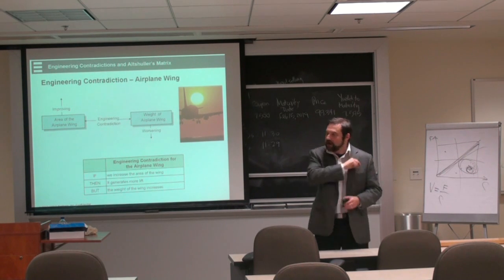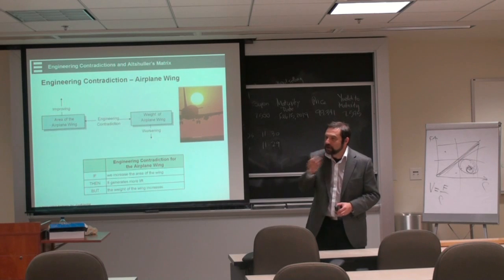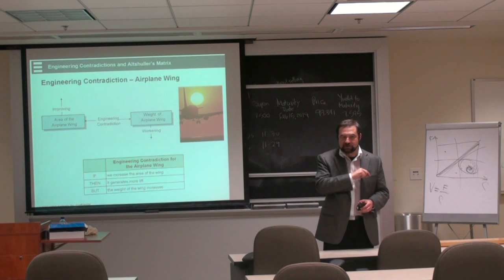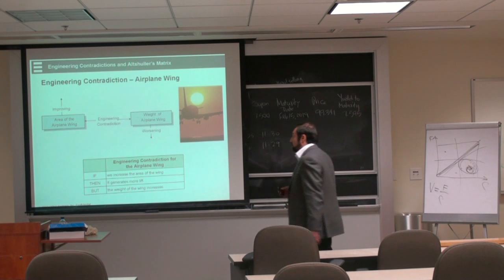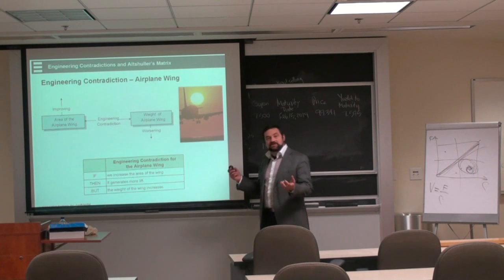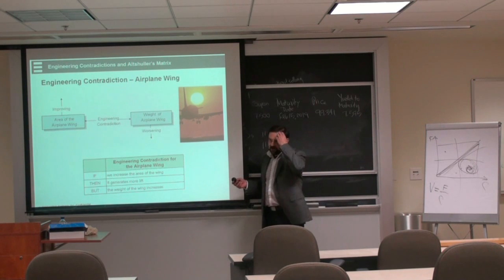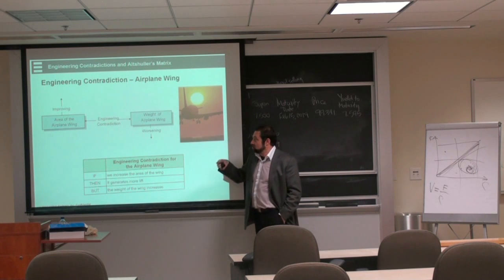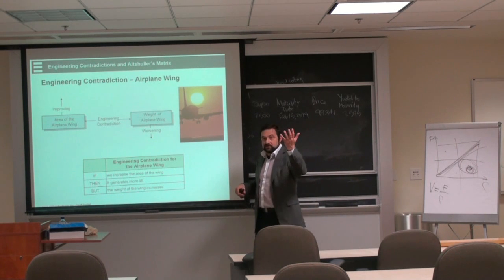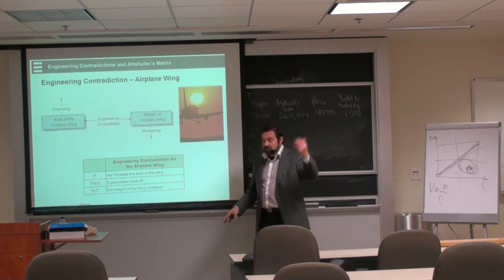So, you have to strive to get your problem to the level of contradiction. And if you can solve it, you will be ahead of the pack. So, Altshuller kind of figured this out and created a matrix of how to solve engineering contradiction. And as I said, engineering contradiction, you improve one parameter, but you degrade another.